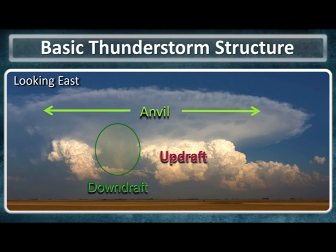And depending on how well the thunderstorm is organized, sometimes you may see a stair-stepping of towering cumulus clouds that are attached to the main updraft. This escalator of clouds is known as a flanking line, and usually accompanies well-organized thunderstorms.